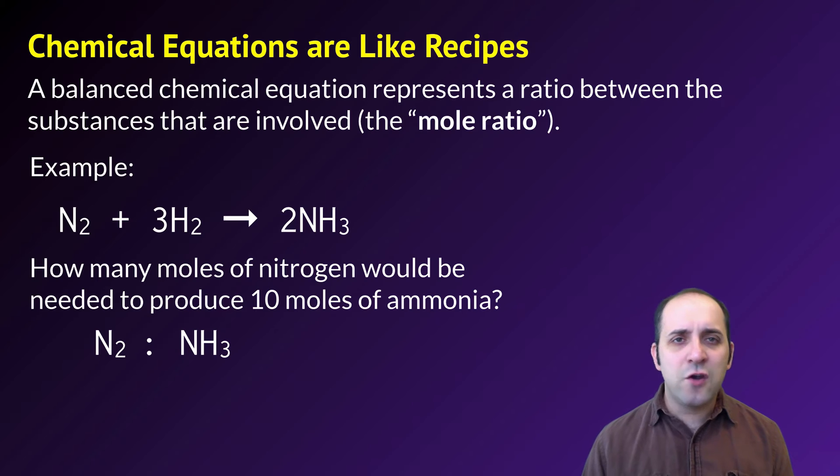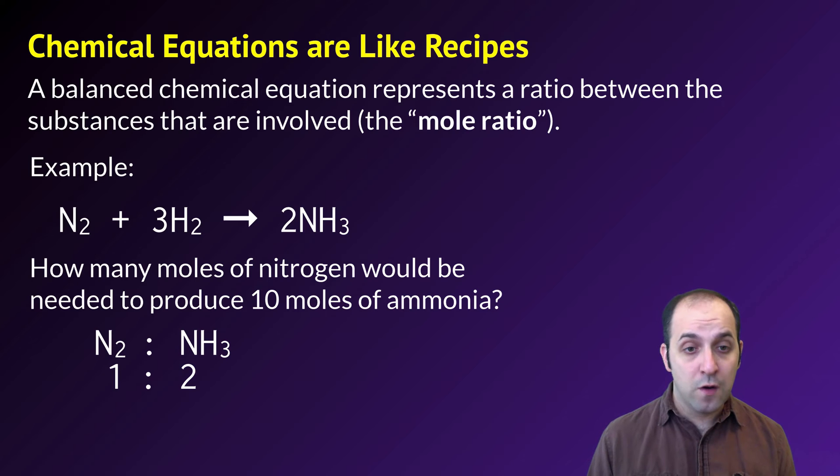So in order to do this, I need to know the ratio between the nitrogen and the ammonia. From the equation, that ratio is 1 to 2. If I want to make 10 moles of ammonia, I'm going to need x moles of nitrogen.